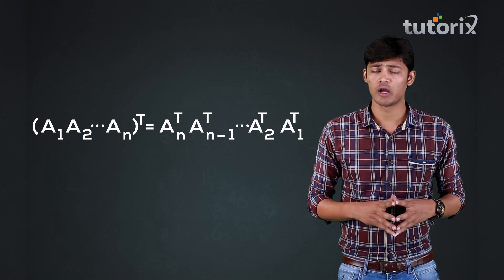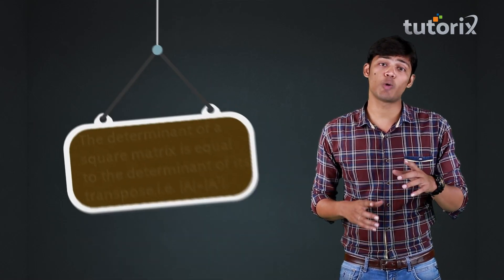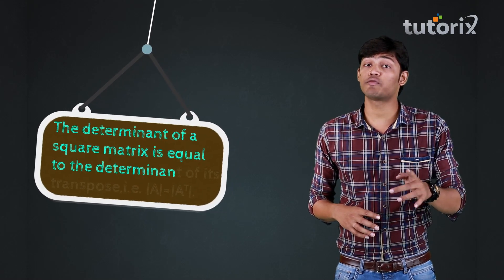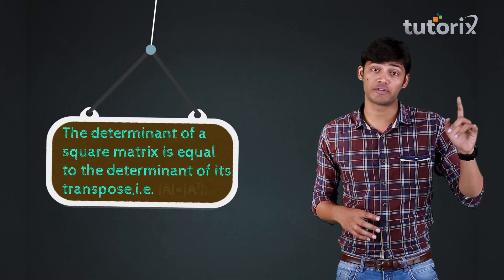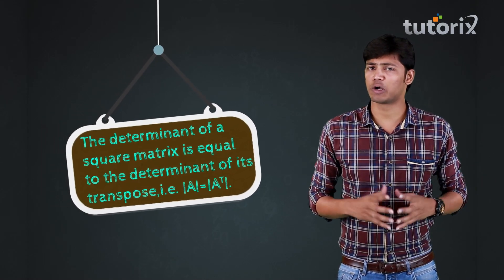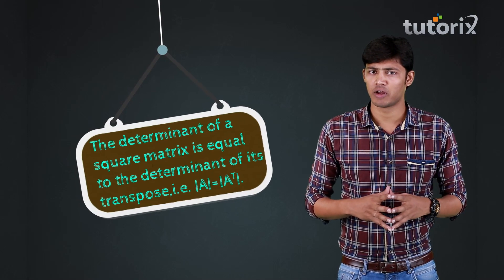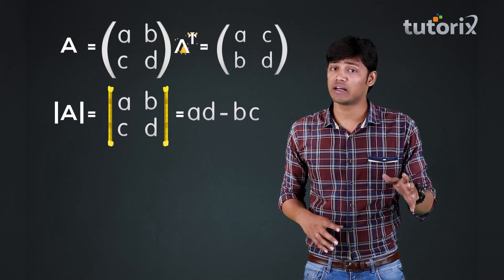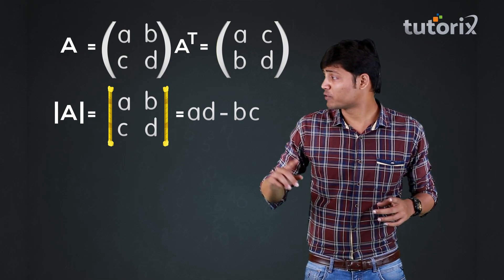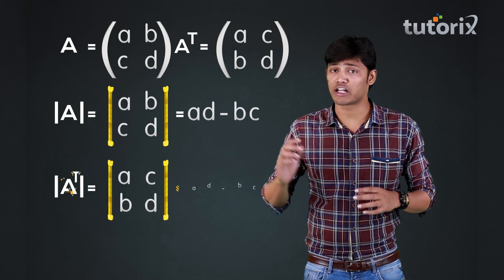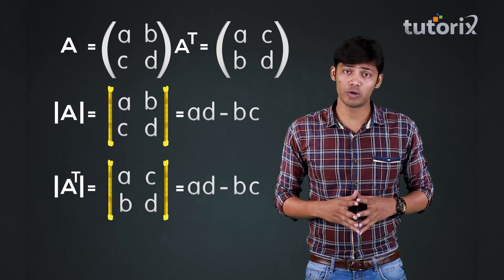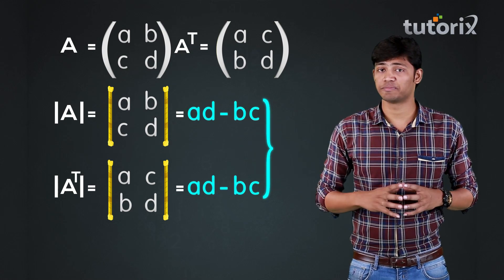The next property is: for any square matrix, the determinant and the determinant of the transpose of that matrix will always be equal. We can clearly see that for the matrix A, its determinant and the determinant of the matrix A transpose are equal, and they are equal to AD minus BC.